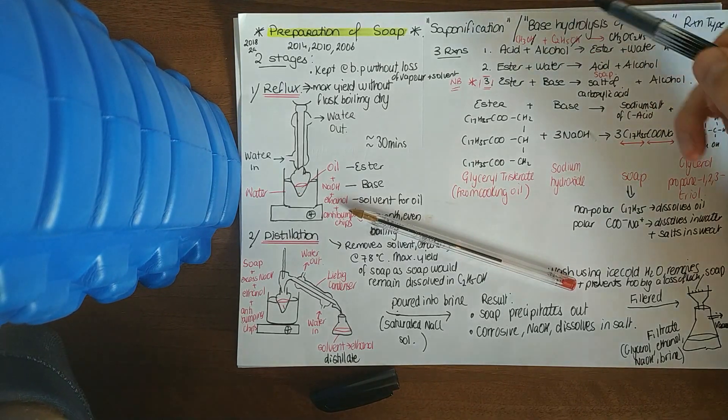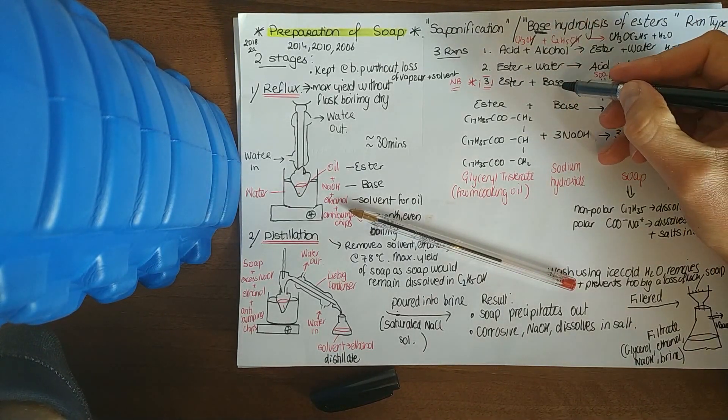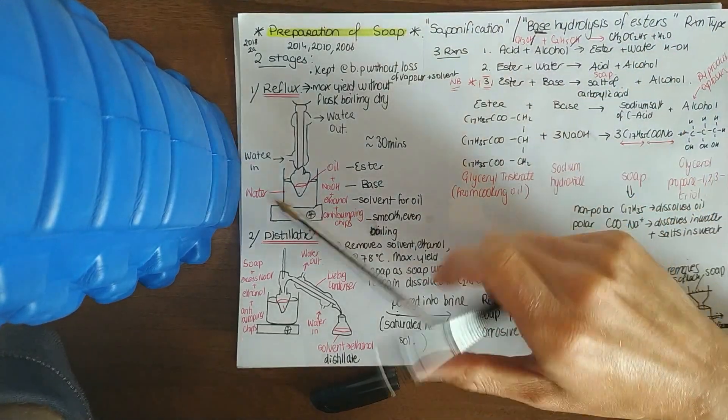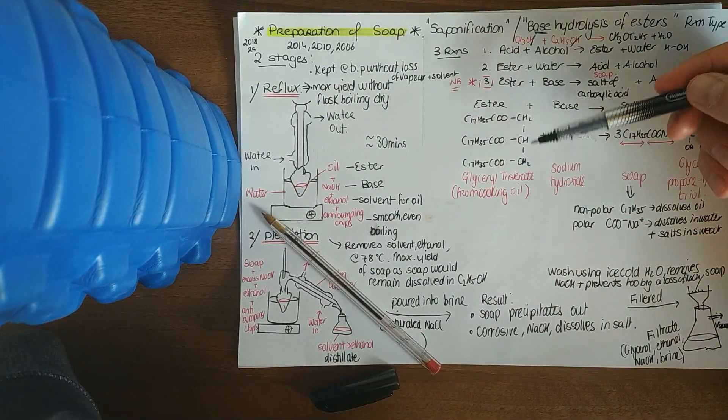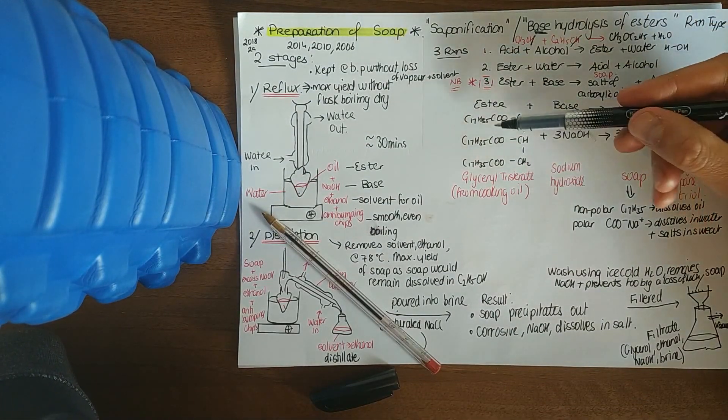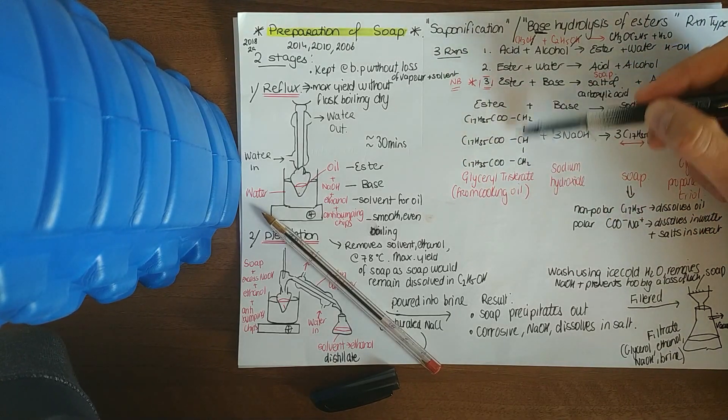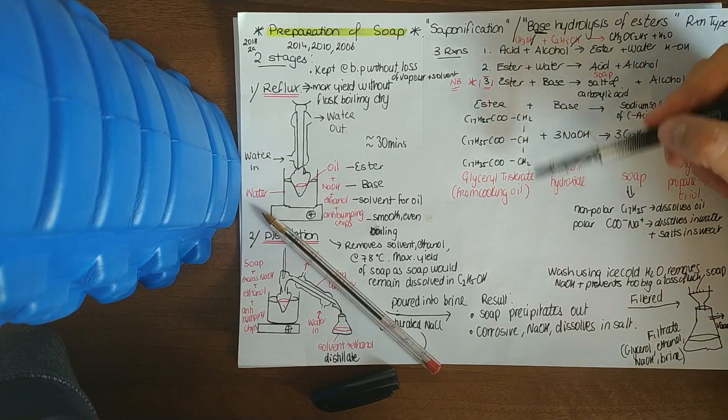When you carry out your soap experiment, you use cooking oil, sunflower oil, and they contain an ester that looks like that. A bit of a mess, but they always give you this formula. It's called glycerol tristerate.